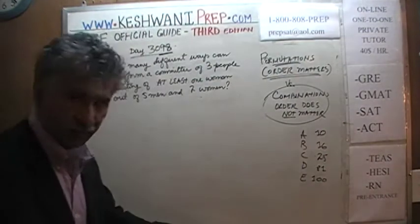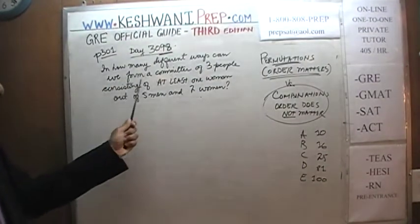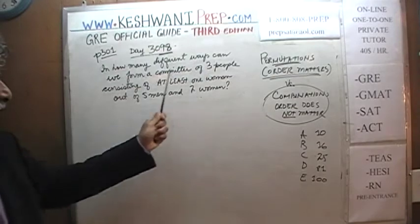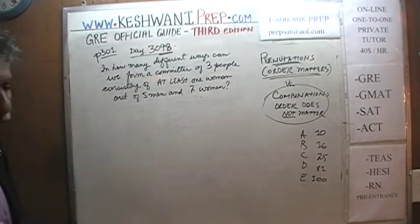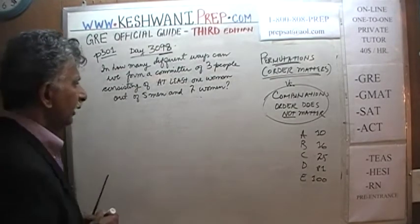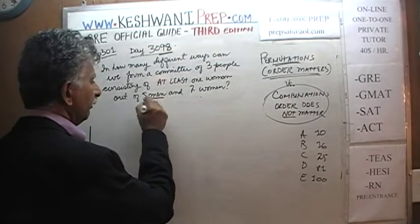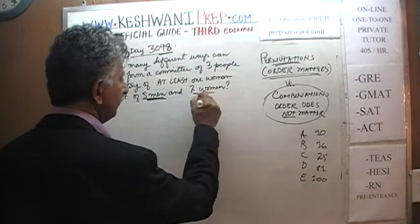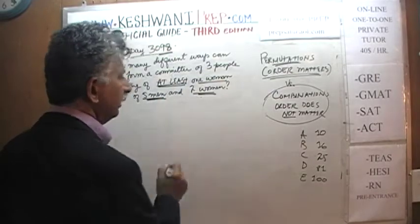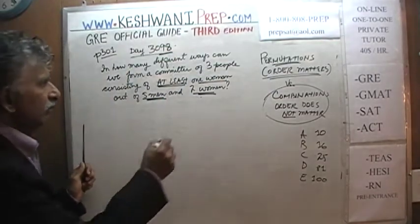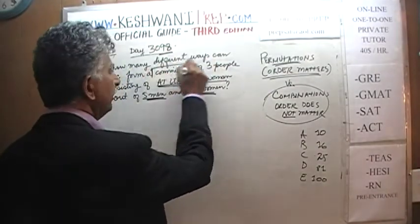Here is what the problem says: in how many different ways can we form a committee of three people consisting of at least one woman out of five men and two women? So we have five men and two women, and the condition is that at least one of the people on the committee has to be a woman — a committee of three.